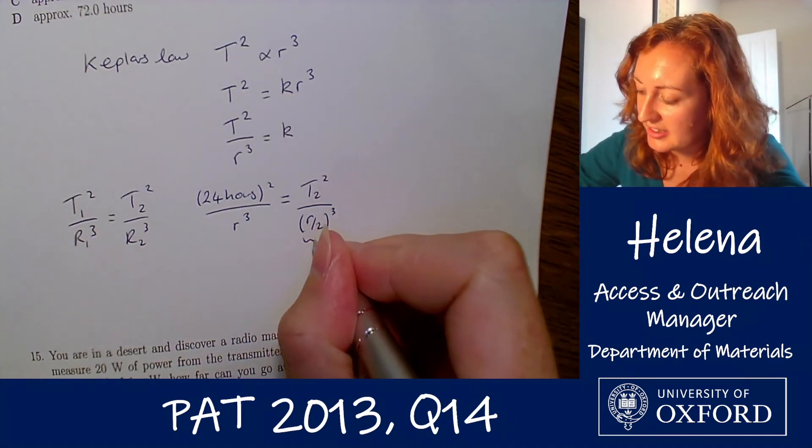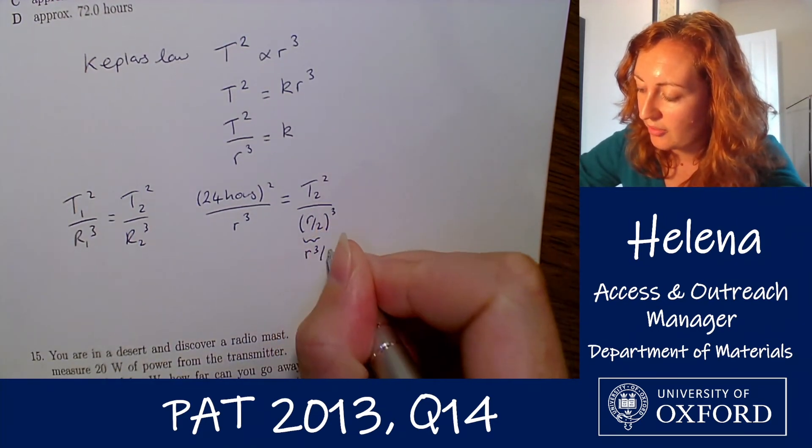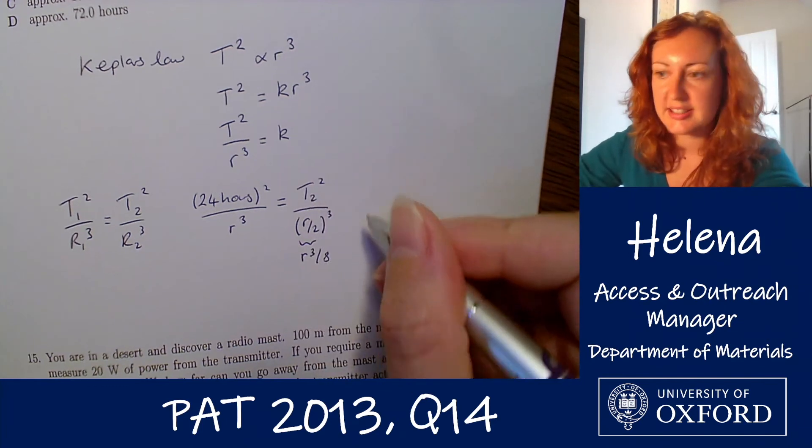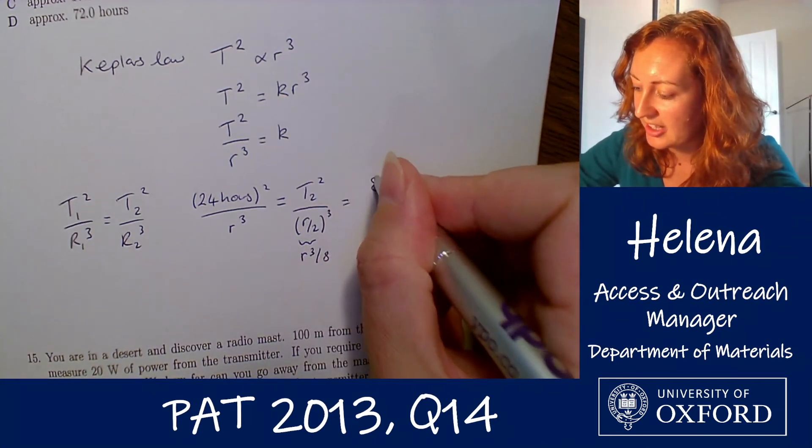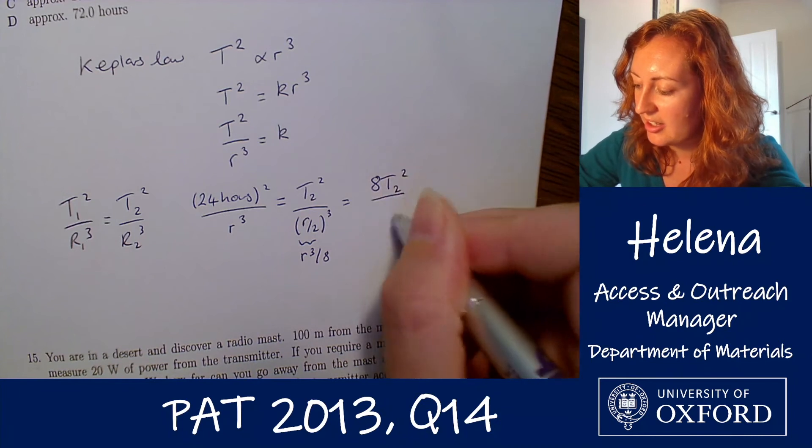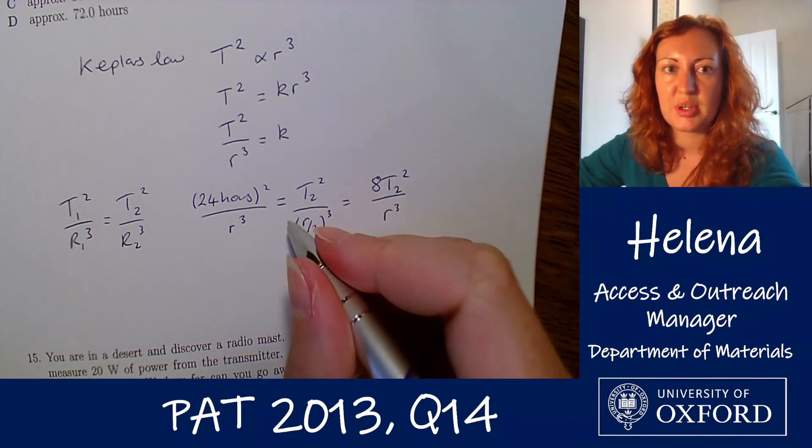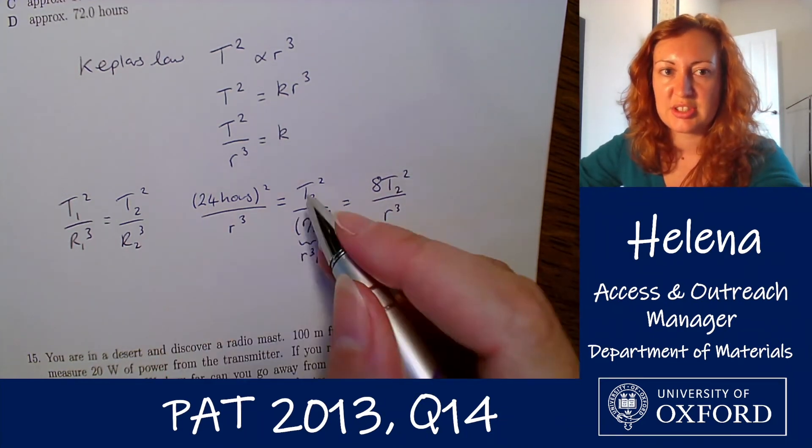Now if we expand this out we would have r cubed over 8. So if we take the 8 up to the top of this fraction here we have that that's 8 t2 squared over r cubed. Okay so we've equated these two ratios for the two satellites.